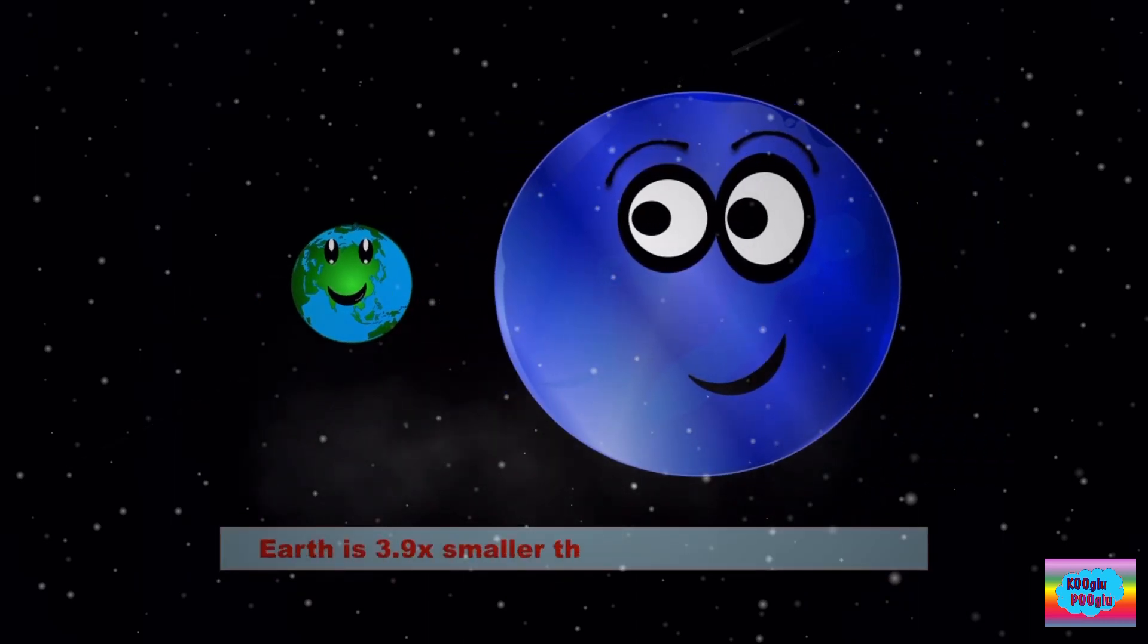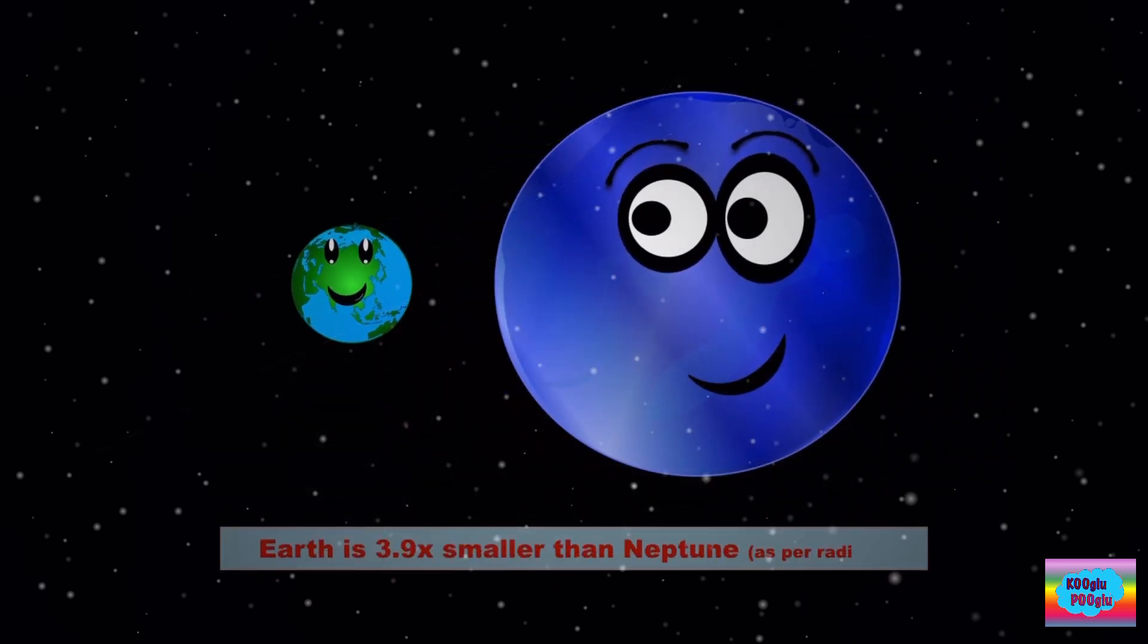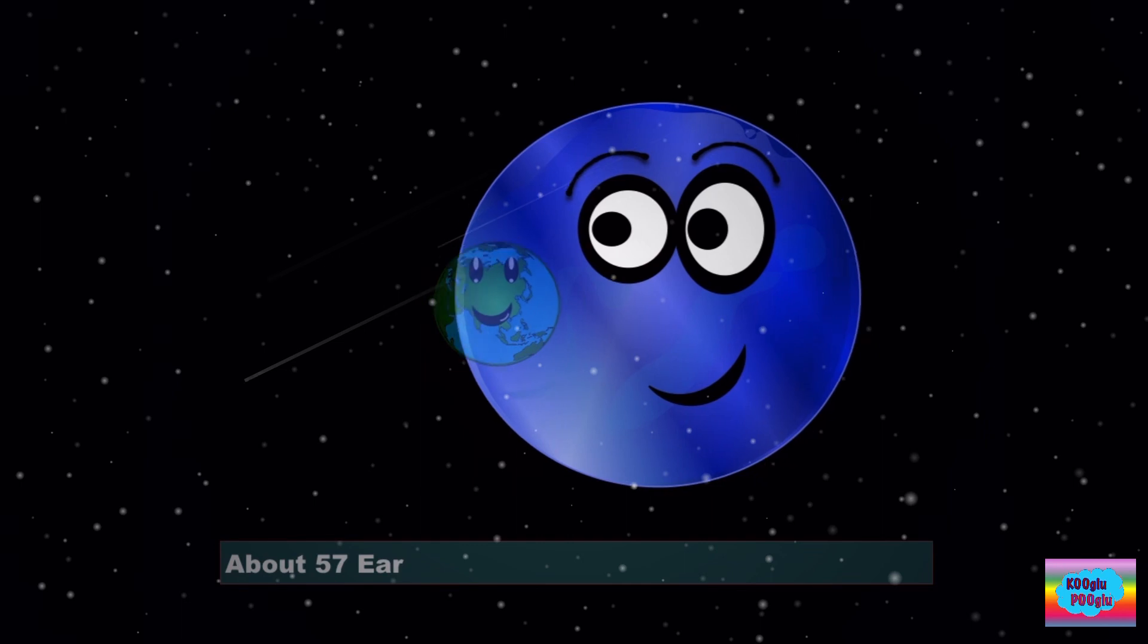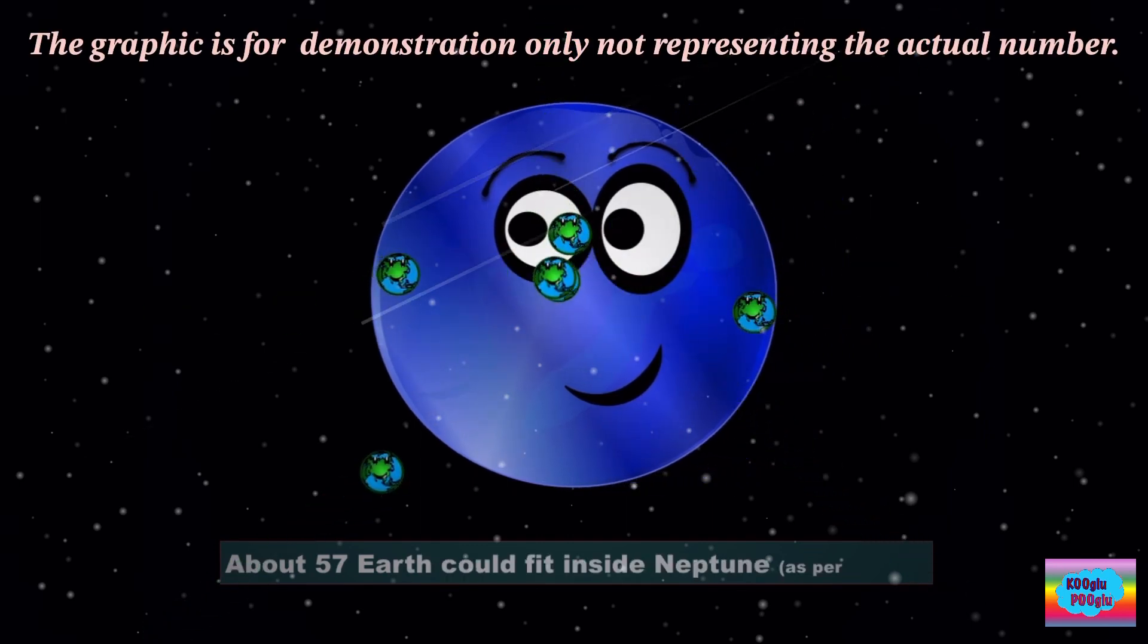Earth is 3.9 times smaller than Neptune. About 57 Earths could fit inside Neptune. Wow!